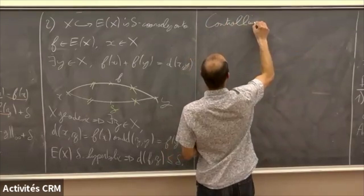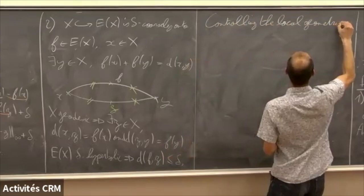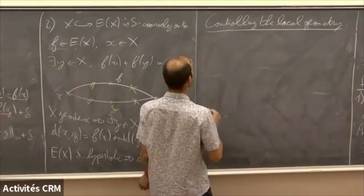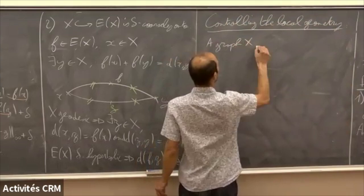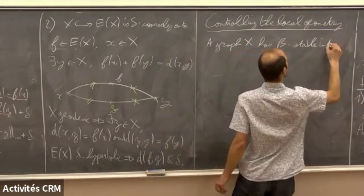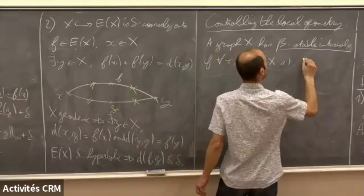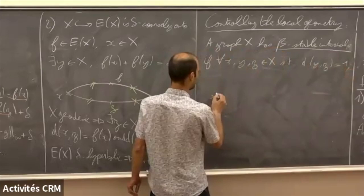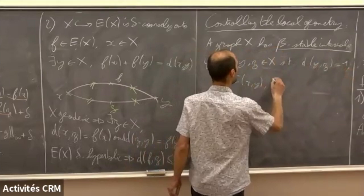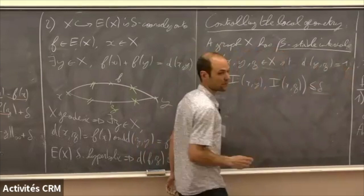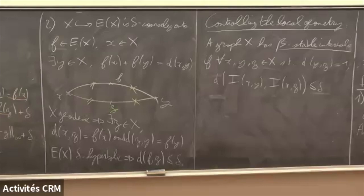Controlling the local geometry — and it works in a fairly general setup, which is rather amazing. A graph X has beta-stable intervals, where beta is some constant, if for any three points such that y and z are adjacent, the Hausdorff distance between the interval between x and y and the interval between x and z is at most beta. So I look at the set of all geodesics between x and y and the set of all geodesics between x and z, and I want these spaces to be not too far apart.